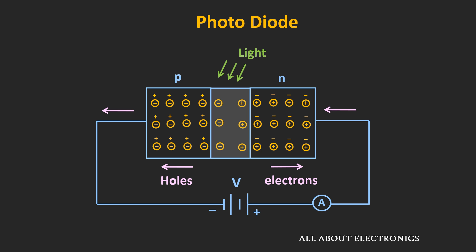In the reverse bias mode, whenever light falls on this photodiode, then in addition to the small reverse saturation current, the photocurrent is also generated. Typically, this reverse saturation current is in the range of microamperes. As the intensity of the light increases, the photocurrent will also increase.